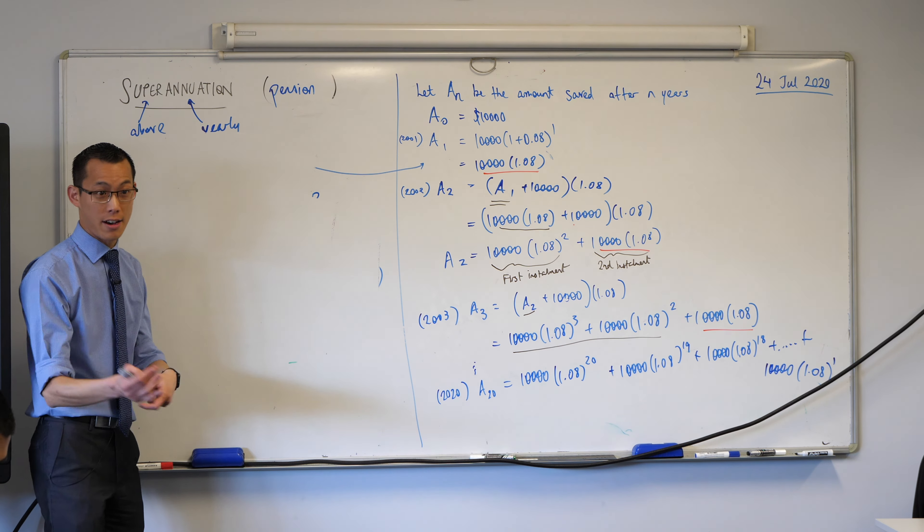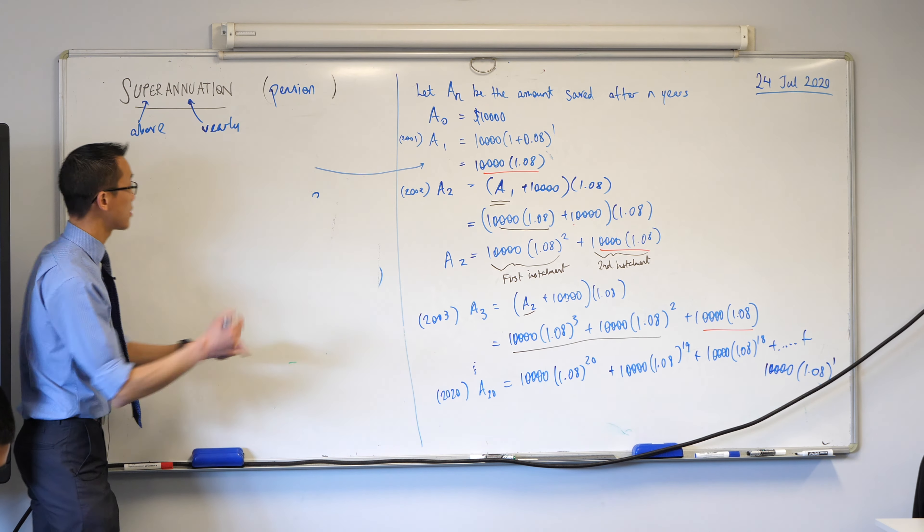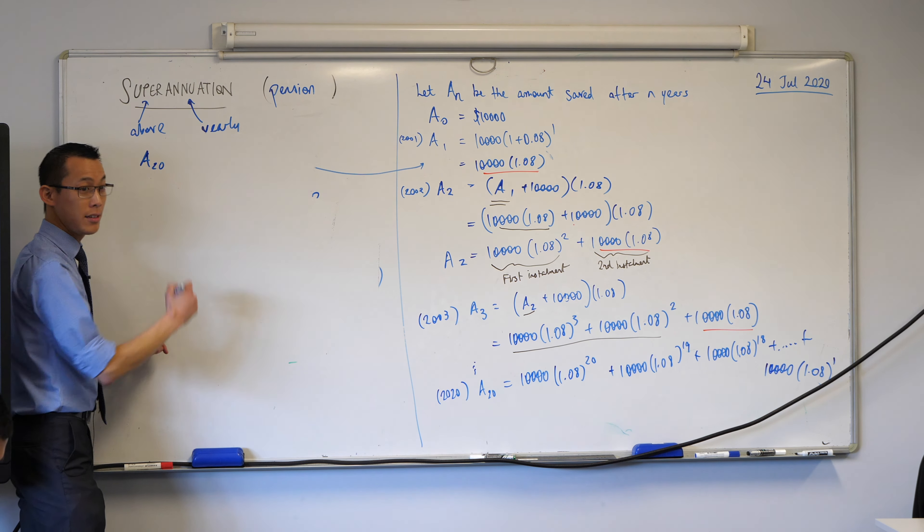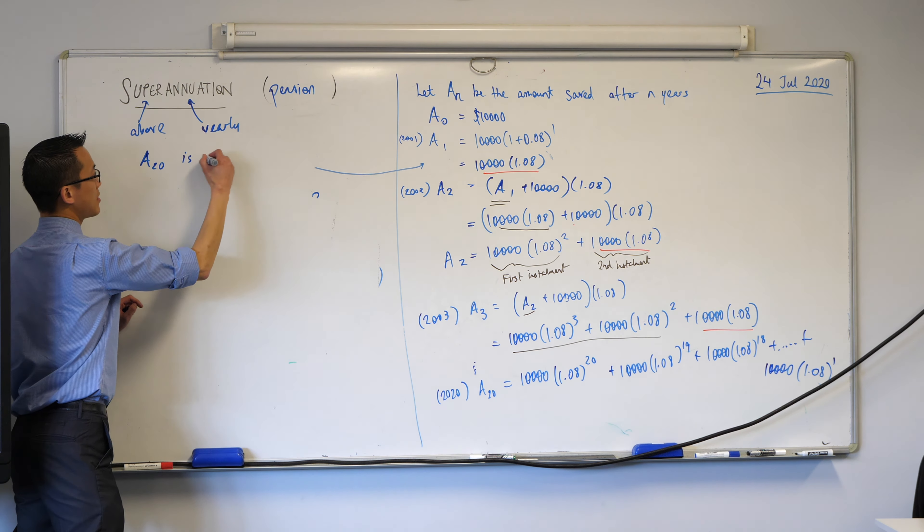Okay, so the way that you set this out, because we're kind of making a bit of a leap here, is to say that this A20 is a geometric progression with certain characteristics.